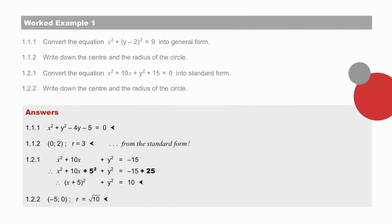Pause to check your answers to worked example 1. The standard form converted to the general form. And then to write down the centre and the radius of the circle, the centre (0, 2), and the radius equal to 3, derived from the standard form.